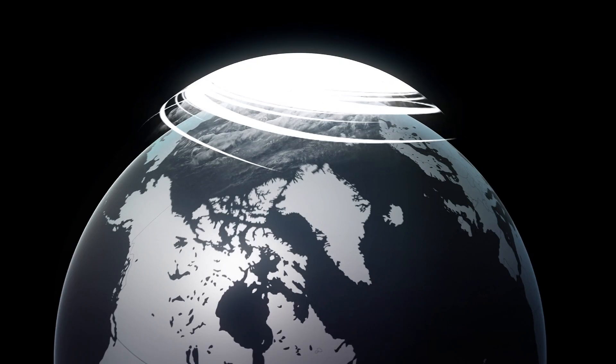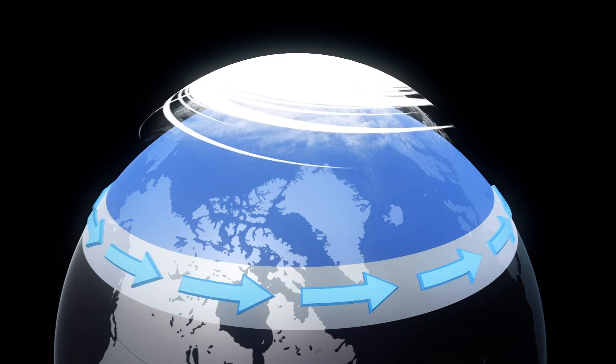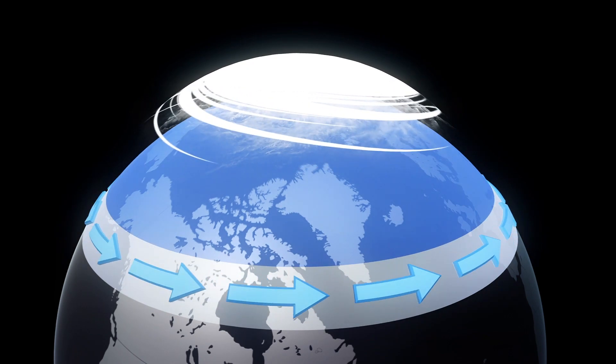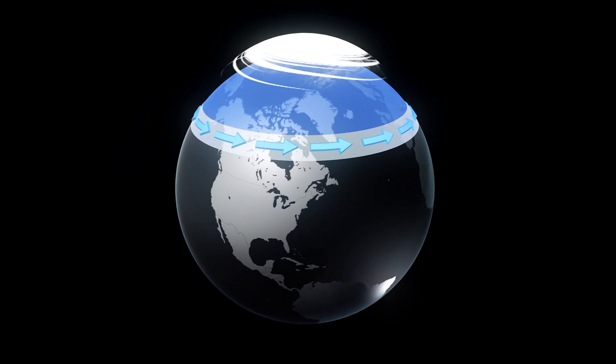The polar vortex is an area of low-pressure cold air surrounding the north and south poles. The vortex, or counterclockwise flow of air, keeps frigid air closer to the poles.